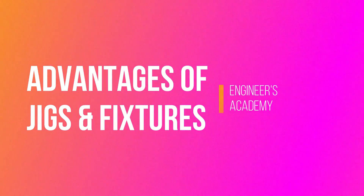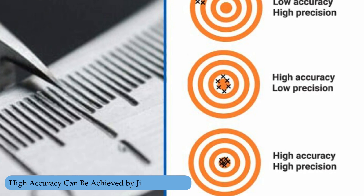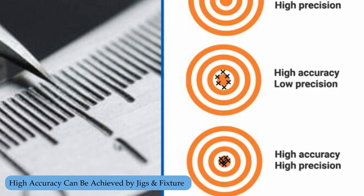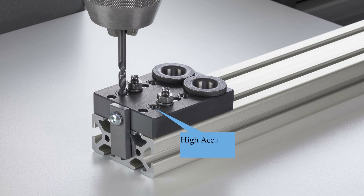In this video we are going to learn about the advantages of jigs and fixtures in a machine shop. Firstly, it increases the production rate and boosts efficiency. It also assures high accuracy of parts — for example, drilling jigs assure the high accuracy of drilled holes.